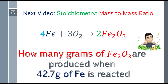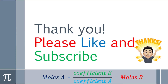That's the end of the lesson on stoichiometry mole-to-mole ratio. Our next video will cover stoichiometry mass-to-mass ratio — for example, how many grams of ferric oxide are produced when 42.7 grams of iron reacts? (4Fe + 3O2 = 2Fe2O3). If you'd like to comment or suggest another topic, please comment down below. This is James, your language instructor — please like and subscribe. Thank you, bye-bye!